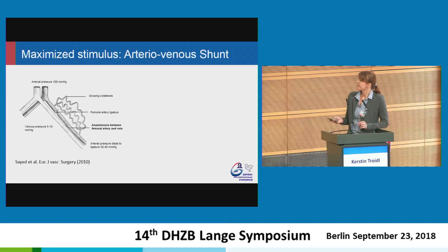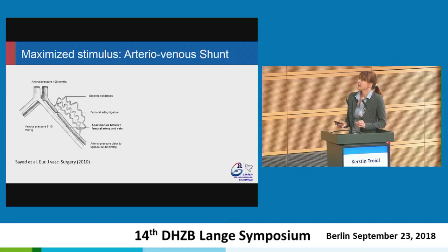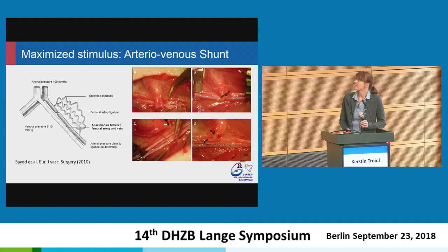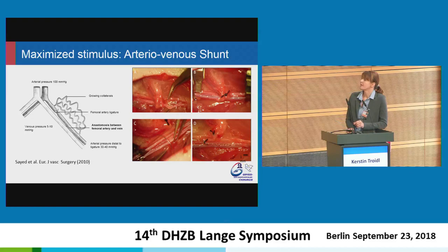Together with vascular surgeons at Frankfurt University, we developed a model to maximize the stimulus of fluid shear stress. We ligate the femoral artery as before, but in addition, distal to the ligation, we create an arteriovenous shunt surgically — we connect the artery to the accompanying vein. The blood flow is directed into the collaterals and drained into the venous system due to pressure differences, leading to a highly increased and chronically elevated fluid shear stress. These pictures show the surgical intervention in rats, which is actually the smallest animal where this AV shunt surgery can be applied.